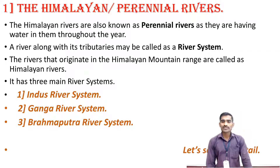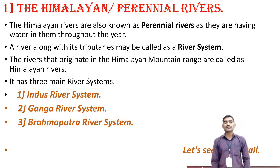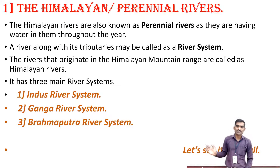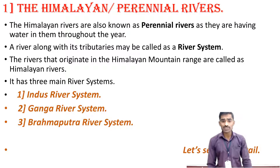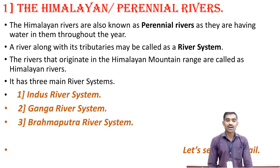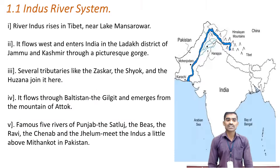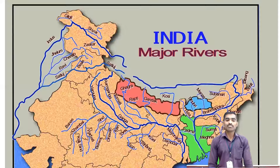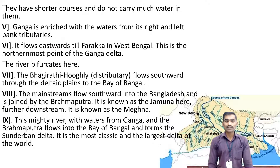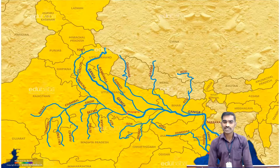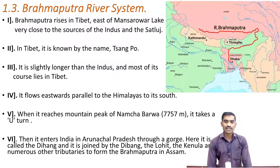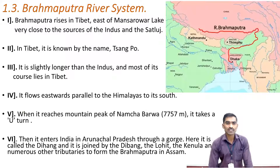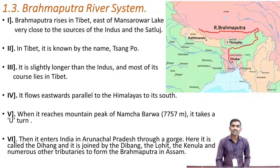Now, the Himalayan rivers have three main basins. We have already learned the Indus river system and Ganga river system in our previous videos — you can go and watch on our channel. In today's session, we will be learning about the Brahmaputra river, which is the main river of northeast India. So let's start the Brahmaputra river system.